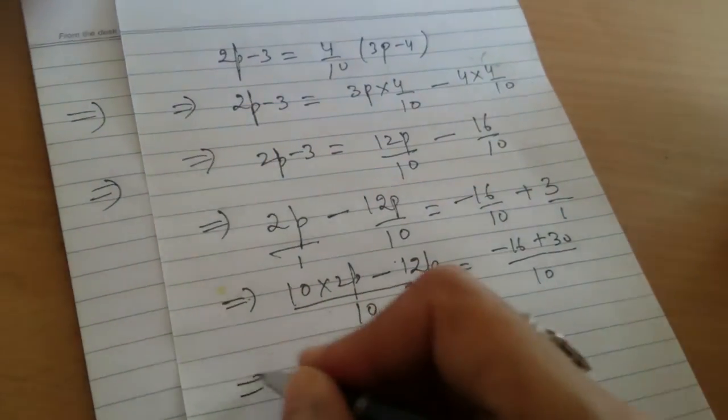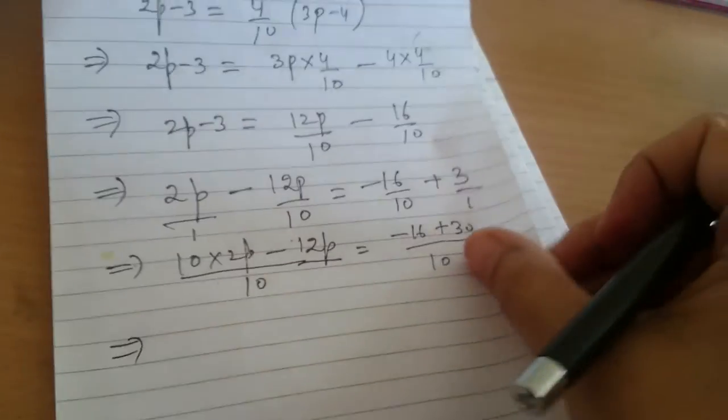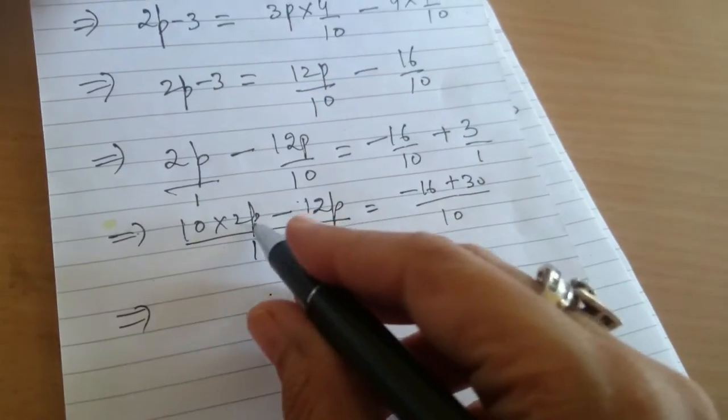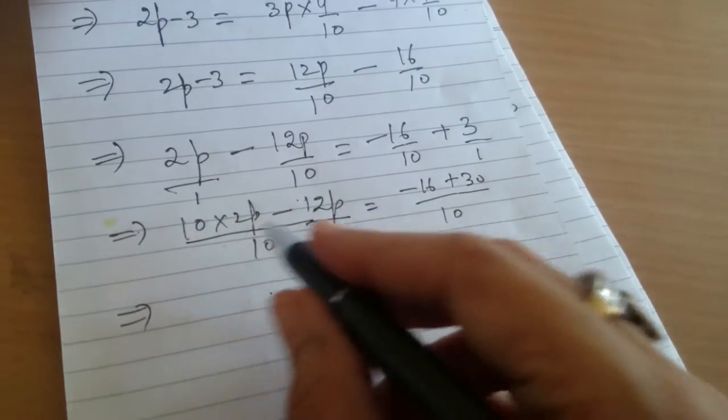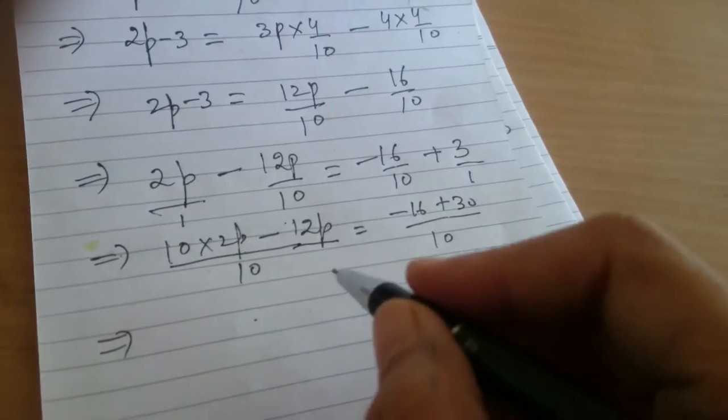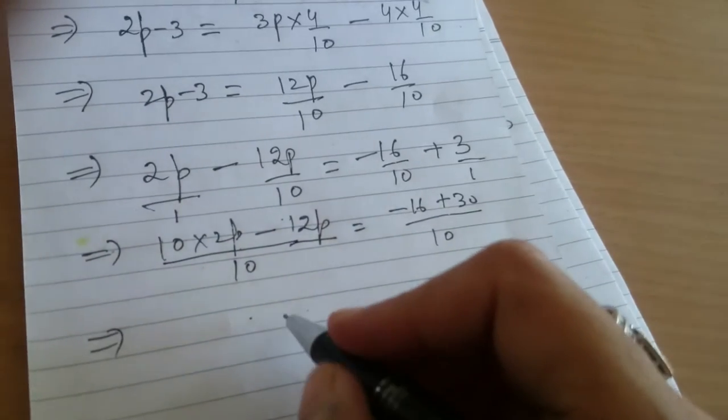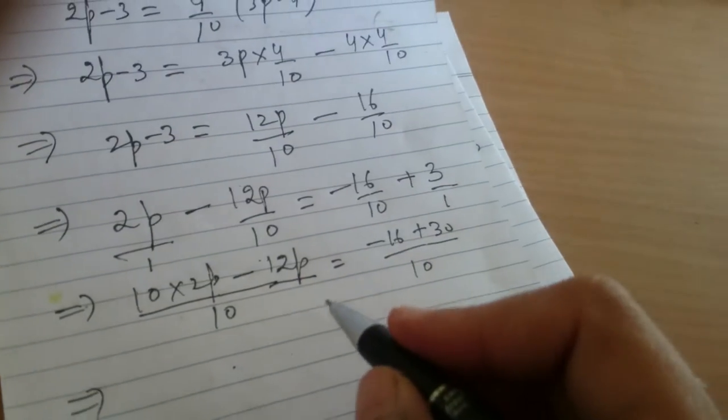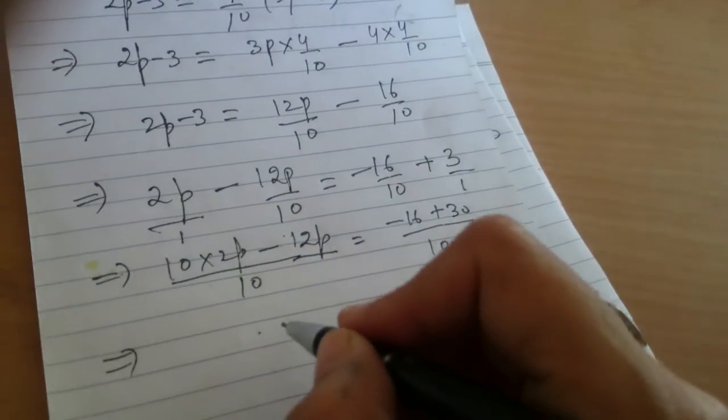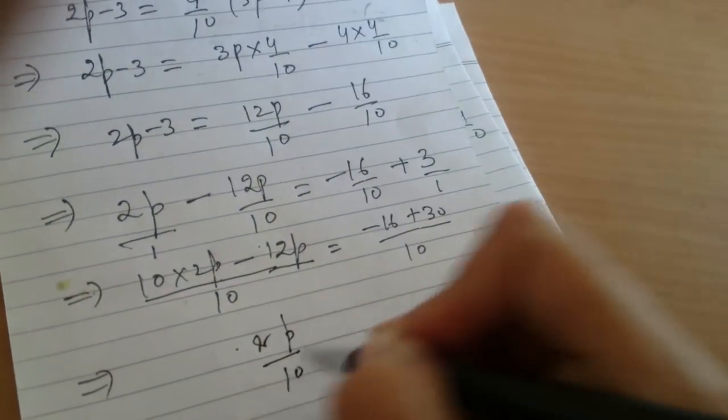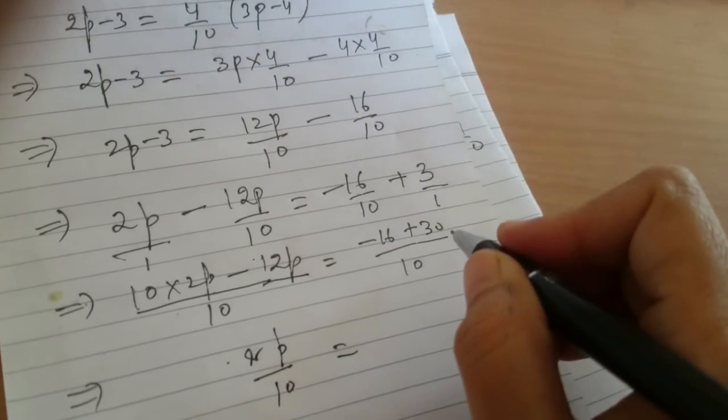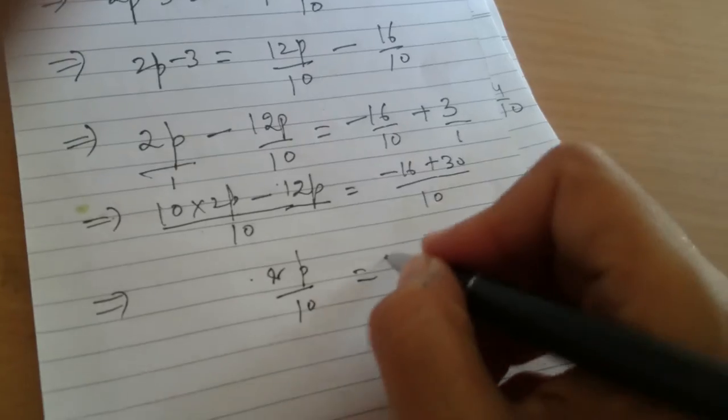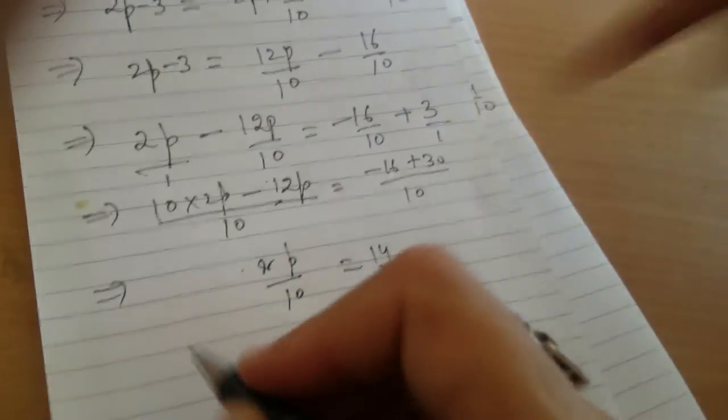This implies, then we will do, this is how much? This is 20, 20p minus 12p. What is 20p minus 12p? 20 minus 12? That's 8. 8p upon 10 equals to, what is minus 16 plus 30? 14, 14 upon 10.